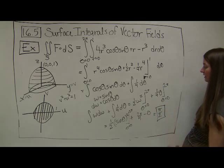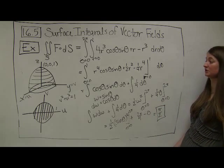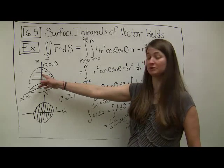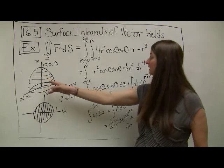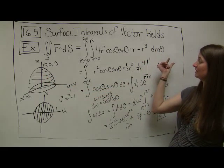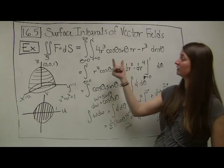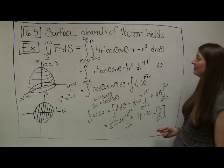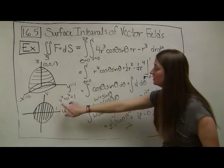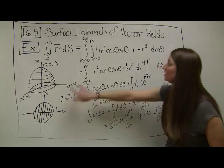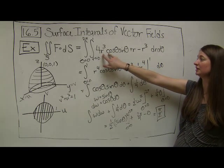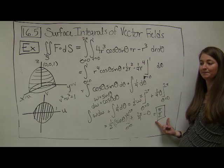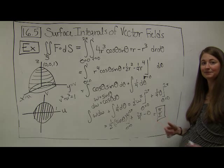The final answer is π/2. This was a more difficult problem: first we found a parameterization of the paraboloid, then computed the normal vector, took the dot product of the normal with F(φ), and because the bounds in u-v were messy, we underwent a coordinate transformation to cylindrical coordinates and evaluated from there. Thanks so much!